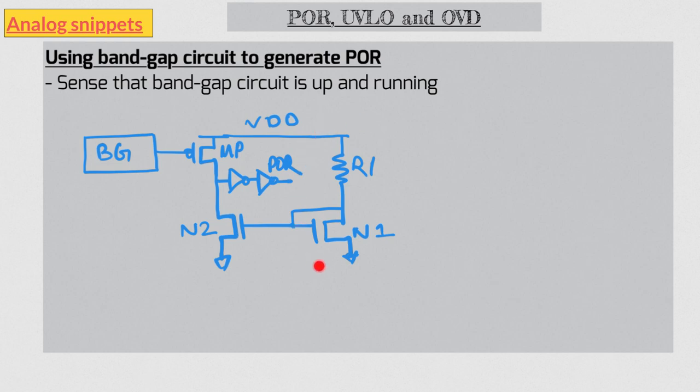Now right-hand side branch is always on branch, so it will have some current even at very low supply voltages. On the other hand, band gap will have current only when it is turned on. So at low supply voltages, current in N2 will be higher than current in MP, hence the output will be pulled low. When band gap turns on, current in MP exceeds current in N2, and POR output becomes high.